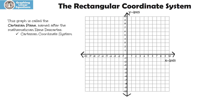Some textbooks will call it the Cartesian coordinate system, the coordinate plane, or the rectangular coordinate system. And that's what we're going to call it — the rectangular coordinate system. You're going to notice that it has two number lines that intersect.